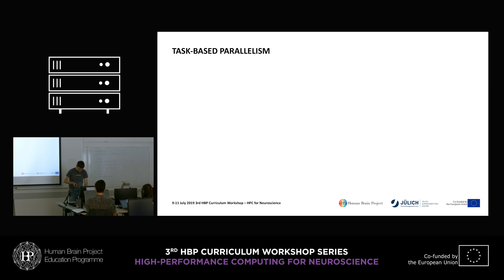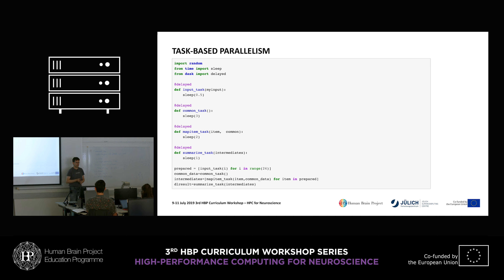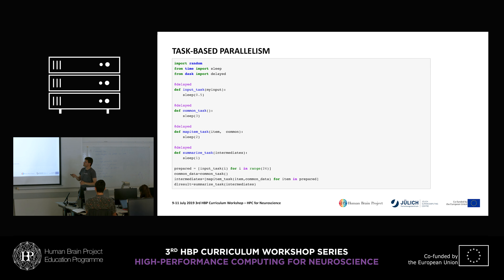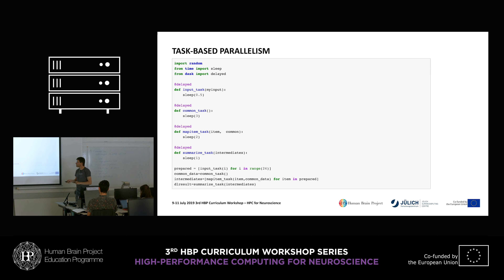With task-based parallelism, I define a set of tasks I want to do and some dependencies between those tasks. Often I won't execute the tasks right away when I define them, but have a delayed execution. Here I have dummy tasks that just sleep, as a good illustration. I have some fast input tasks, a common task needed in preparation for everything else that takes about six times as long, a map_item task that sleeps for two seconds, and a reduction at the end — a typical pattern, very similar to what we just saw.